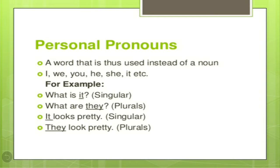Now children, when we talk about singular or plural things, let's see what type of personal pronouns are used. For example: 'What is it?' — this is singular. 'What are they?' — this is plural. 'It looks pretty' — singular. 'They look pretty' — plural. So 'it' and 'they' are both personal pronouns, but they are used in sentences to depict singular as well as plural.